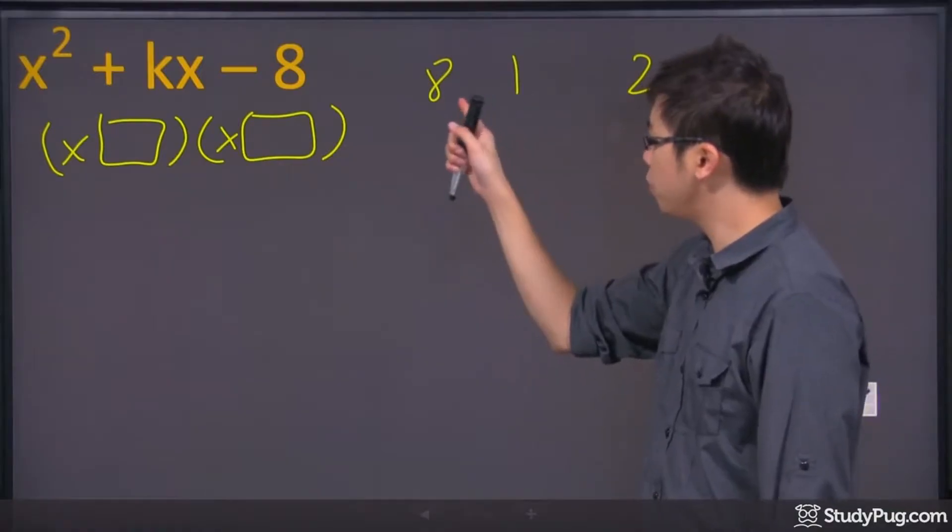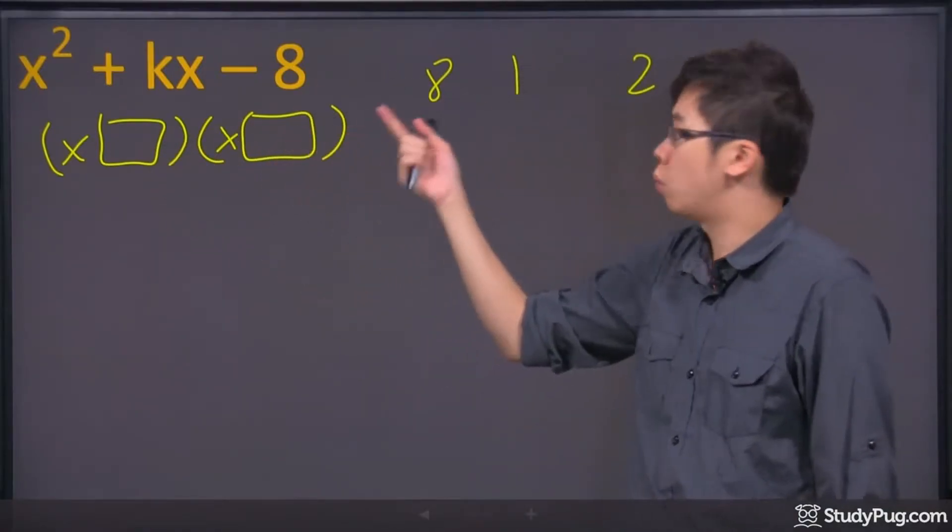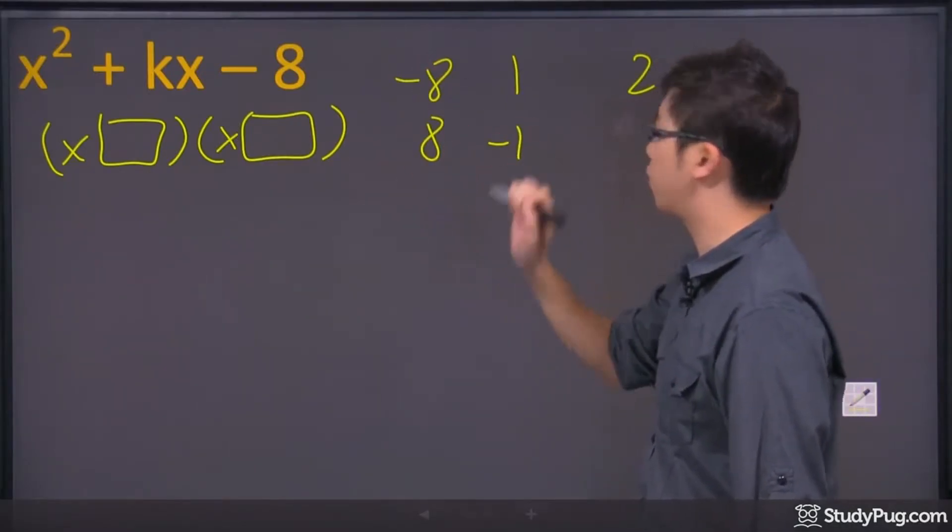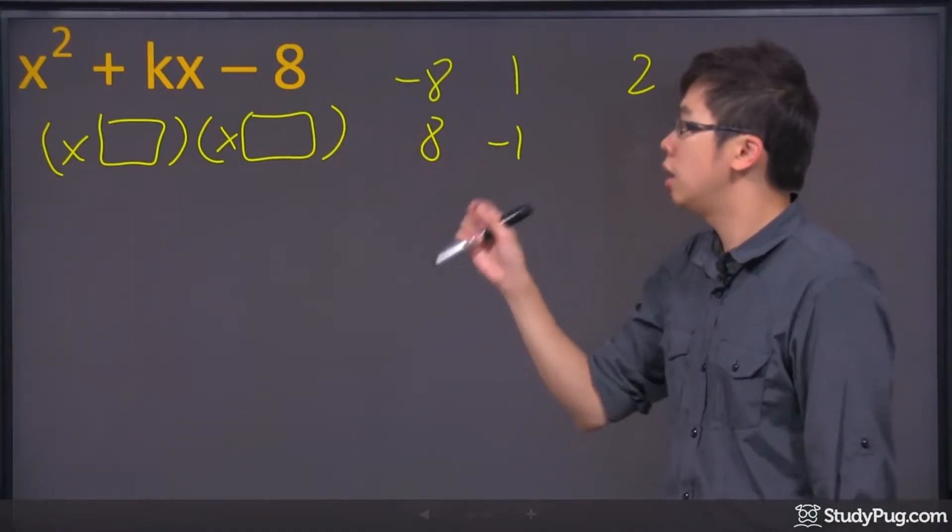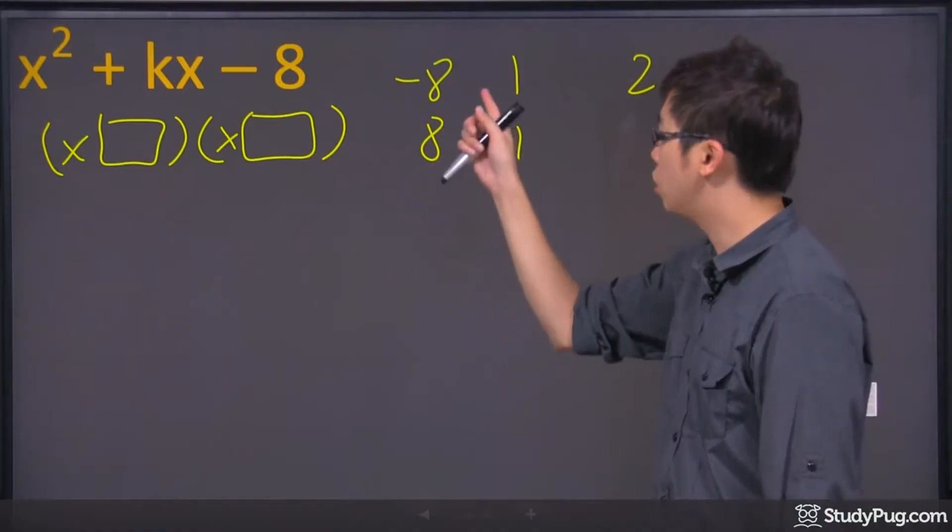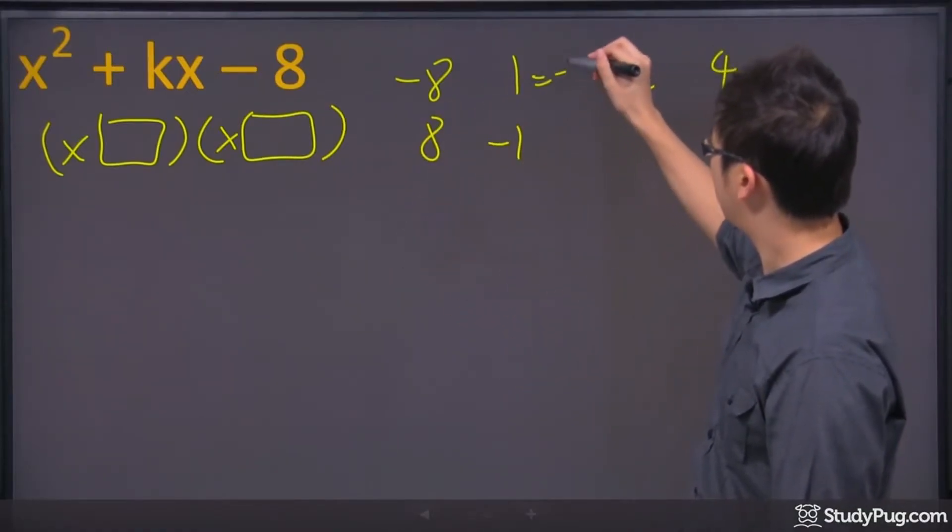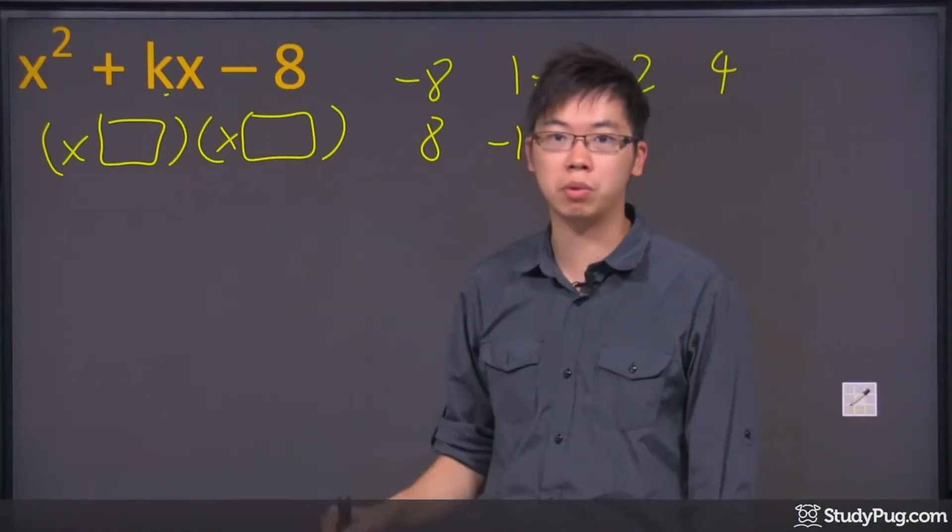So if you put 8 and 1 here, they have to give you negative 8. So one of them has to be negative. It could be negative 8 and 1, or 8 and negative 1. Those are two possible choices that will give you negative 8 if you multiply them together. Now, if you add them together, this will be negative 7 and this will be 7. And that's what that k will represent.